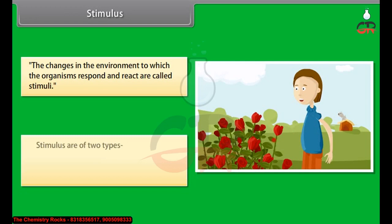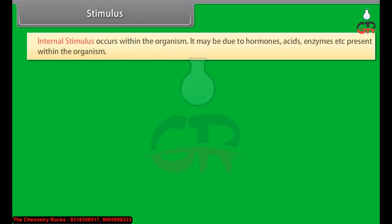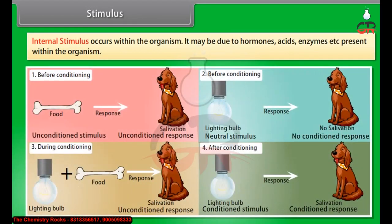Stimuli are of two types: external stimulus and internal stimulus. External stimulus is due to environmental factors like heat, light, sound, water, wind, etc. Internal stimulus occurs within the organism. It may be due to hormones, acids, enzymes, etc. present within the organism.